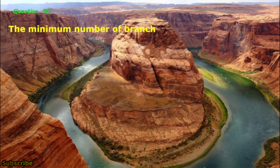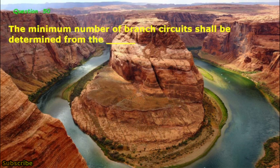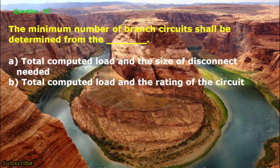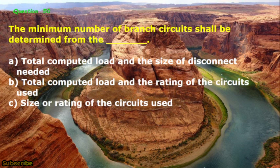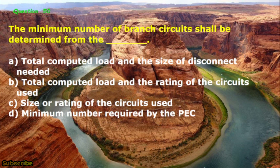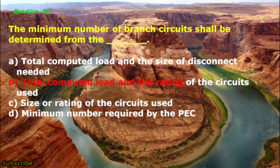Question No. 50: The minimum number of branch circuits shall be determined from the blank. A. Total computed load and the size of disconnect needed, B. Total computed load and the rating of the circuits used, C. Size or rating of the circuits used, D. Minimum number required by the PEC. The correct answer is letter B: Total computed load and the rating of the circuits used.